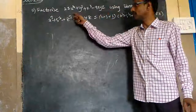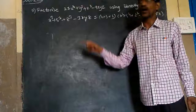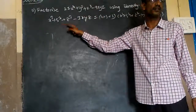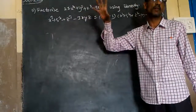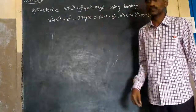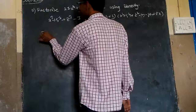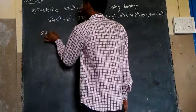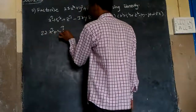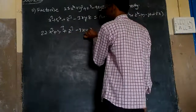Now, if you observe this one, this expression is in the form of this identity. All these are in the same form. First, take this one: twenty-seven x cube plus y cube plus z cube minus 9xyz.